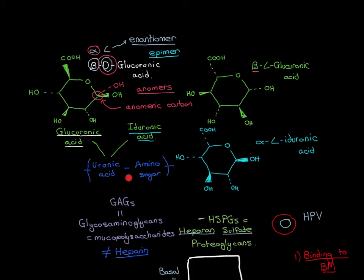You make lots of disaccharides of this form — a uronic acid sugar bound to an amino sugar — then polymerize them together, and that polysaccharide will be called a glycosaminoglycan. Importantly, the disaccharides in each of the different positions along the polysaccharide do not need to be the same type. They just have to be of this same basic form: a uronic acid sugar bound to an amino sugar.